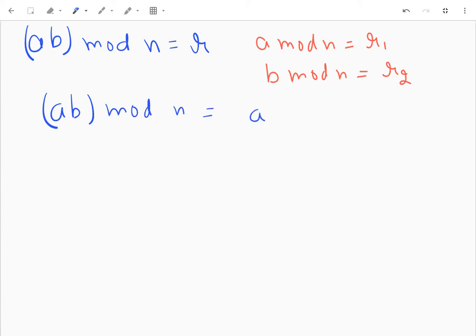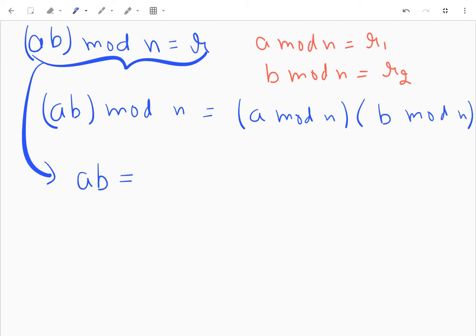So let's begin. From this statement what I can conclude is that ab is equal to n times k plus r.